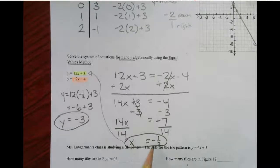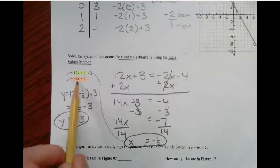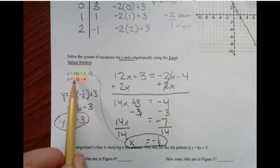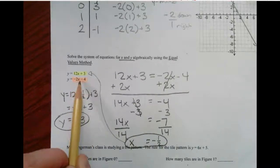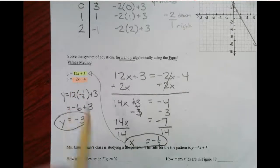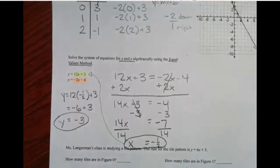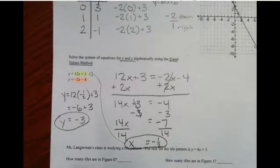If I did this correctly, if I plug x in here, if I plug negative 1 half in here, I should get negative 3. So negative 2 times a negative 1 half is positive 1. Then 1 minus 4 is indeed negative 3. All right.